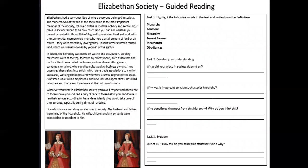Elizabethans had a very clear idea of where everyone belonged in society. The monarch was at the top of the social scale as the most important member of the nobility, followed by the rest of the nobility and the gentry. Your place in society tended to depend on how much land you had and whether you owned or rented it — owning was better than renting. Ninety percent of England's population lived and worked in the countryside. Yeomen held small amounts of land; they were essentially the lower gentry. Tenant farmers rented land usually owned by yeomen or the gentry.